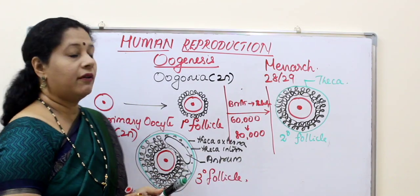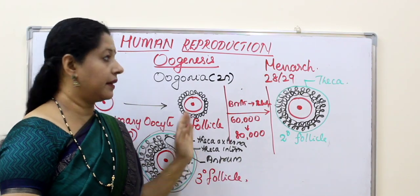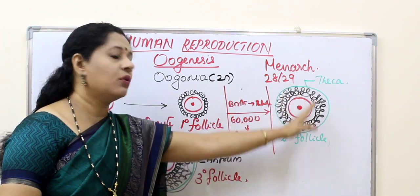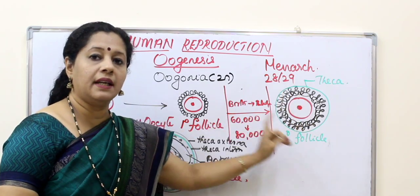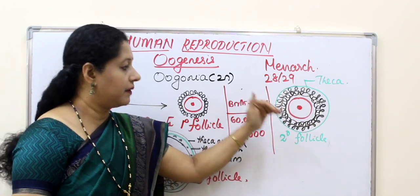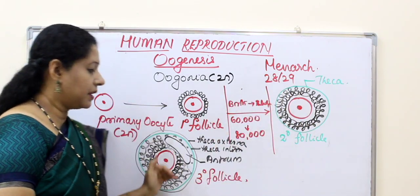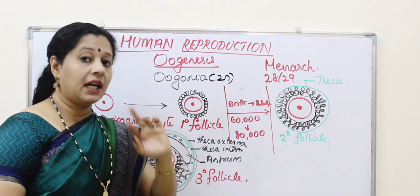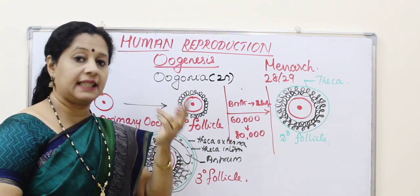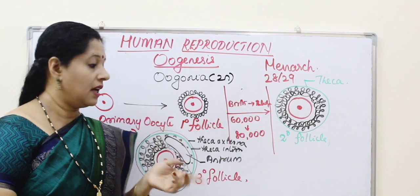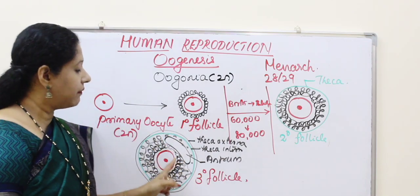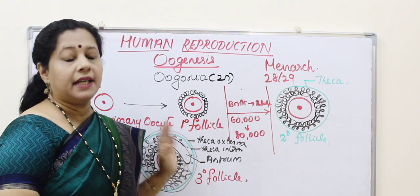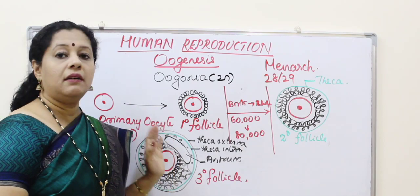To summarize the differences: from primary to secondary follicle, the changes are more granulosa layers and formation of a theca layer. From secondary to tertiary follicle: more granulosa, theca differentiates into theca interna and theca externa, and a fluid-filled cavity called the antrum forms.